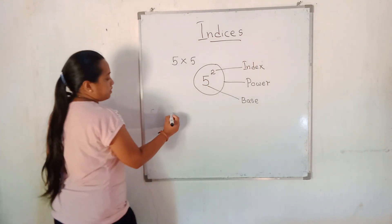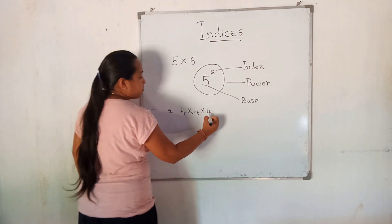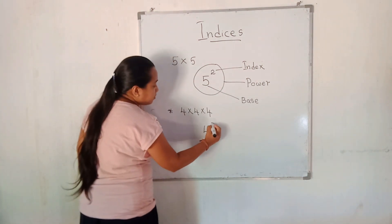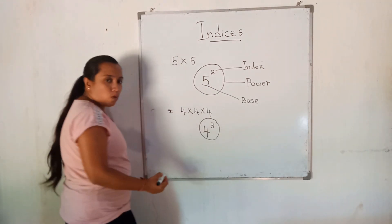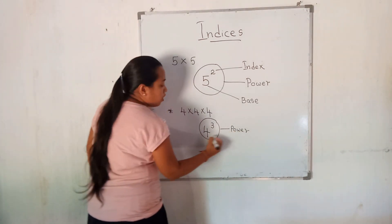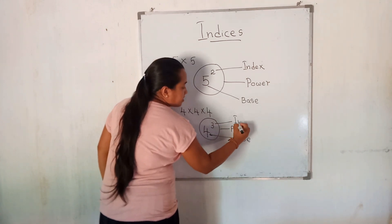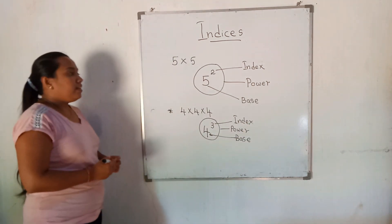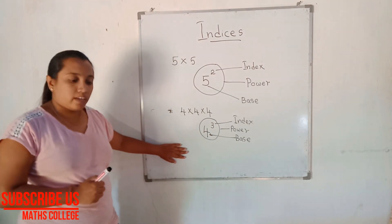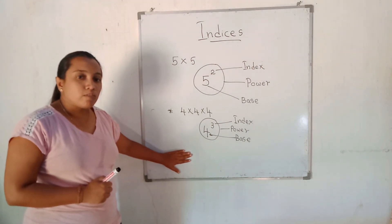Another example: 4 multiplied by 4 multiplied by 4 can be written as the power 4 to the power 3. Here, 4 is the base and 3 is the index. These are things you have learned at the previous level. Now I will give a simple question for you to do.